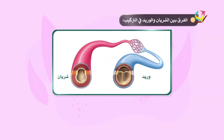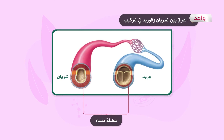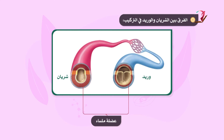مقارنة بين الشريان والوريد: العضلة الملساء في الشريان أكثر سماكة من العضلة الملساء في الوريد. تجويف الوريد أكثر اتساعاً من تجويف الشريان. وتحتوي الأوردة على صمامات بينما الشرايين لا تحتوي على صمامات.